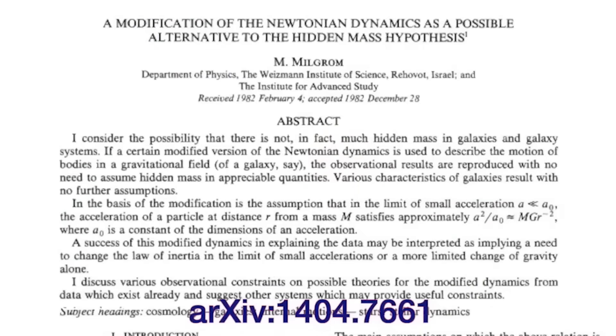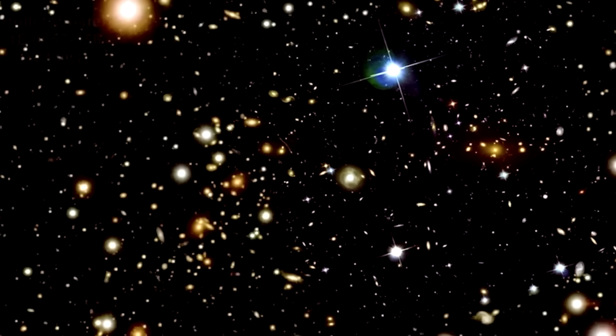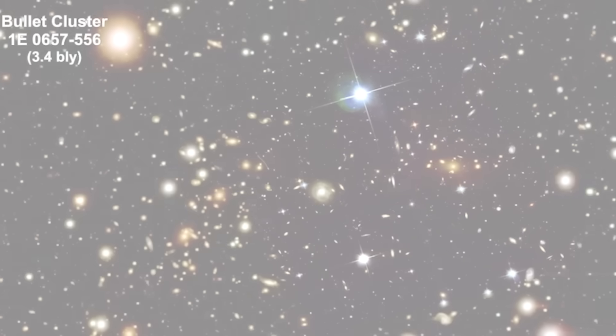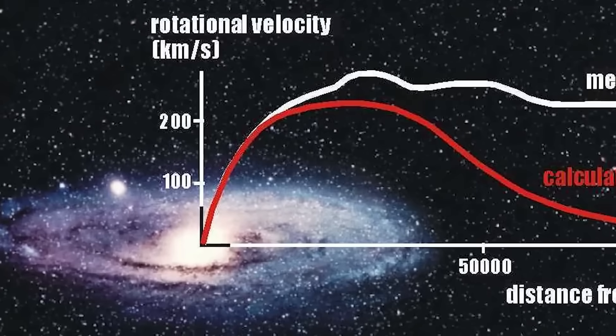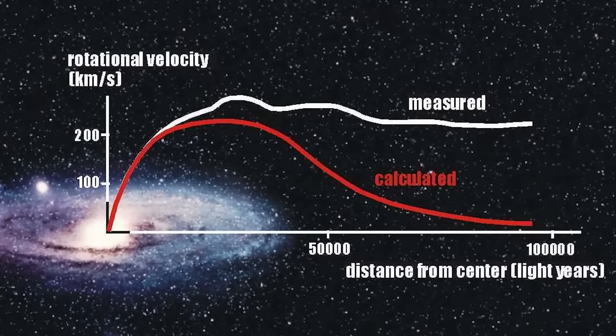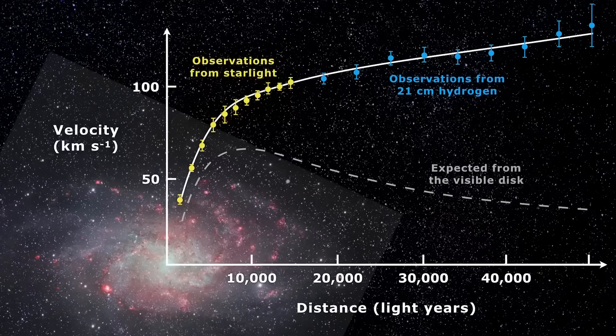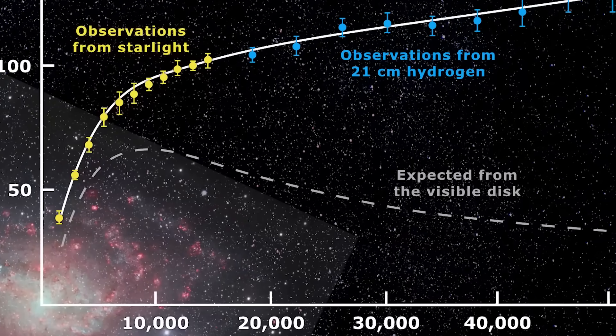the need for dark matter by instead invoking a new form of gravitational force that operates not on local scales but on cosmic scales between galaxies and internal dynamics of galaxies to explain the peculiar rotation curves of galaxies first observed by Vera Rubin.